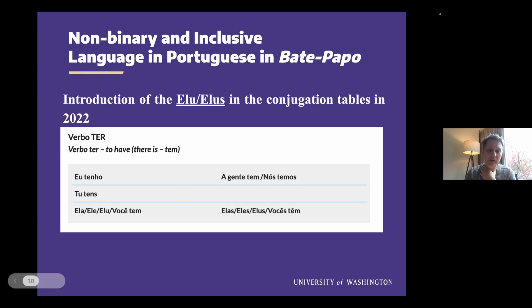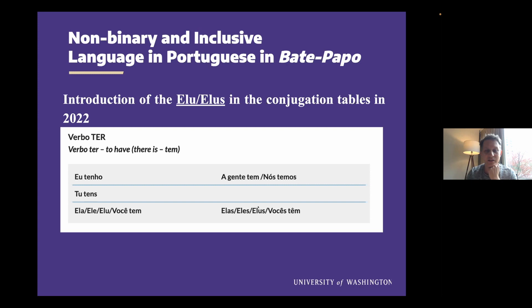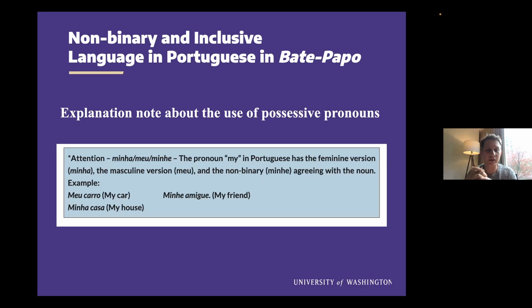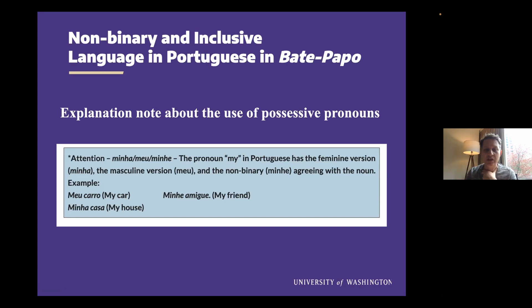Here's a conjugation table. We have ELU, TU, ELA, ELI, ELO, VOCÊ TEM, A GENTE — which is like 'we folks' in Brazil, and we use that very often more than 'nós.' And then ELAS, ELIS, ELOS, VOCÊS. And with some of the possessive pronouns — which can be quite complicated in Portuguese because you have marked gender as well — I decided to do a little bit of scaffolding. So we have 'meu carro' for my car, 'minha casa' for my house, and 'mine amigui' for my friend, with an explanation of the non-binary ending with the letter E.